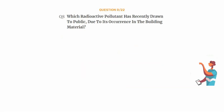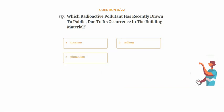Question number 8. Which radioactive pollutant has recently drawn public attention due to its occurrence in building material? Option A: Thorium. Option B: Radium. Option C: Plutonium. Option D: Radon.